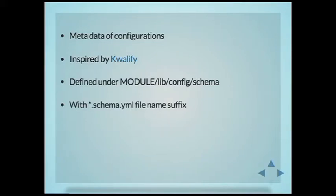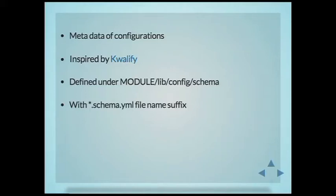Another thing we implemented after configuration schema was validation. We have everything in a config YAML file, but Drupal is not a very strict content-type validator. All the form data that comes in to be saved comes as a string — so we don't know whether it's a Boolean or a string zero. All these validations in core are now done by configuration schema. We started it for translation purposes, and now we have validation in place.